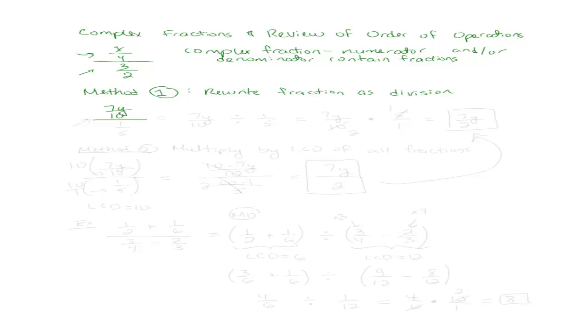So let me show you what that looks like. Say we have the complex fraction 7y over 10 over 1 fifth. That's a complex fraction because we just said complex fractions have the numerator, denominator, or both as fractions. So we're going to write this as division, keeping in mind that this fraction bar really means division. So I can rewrite it as 7y over 10 divided by 1 over 5. And we know how to do that because we know how to divide fractions from previous sections.